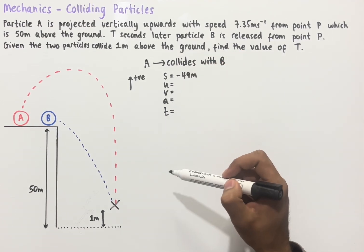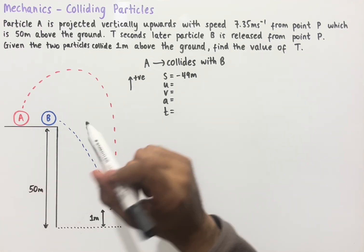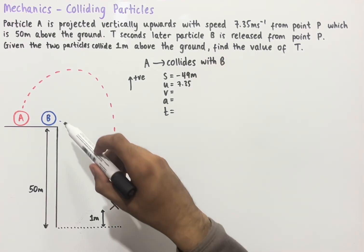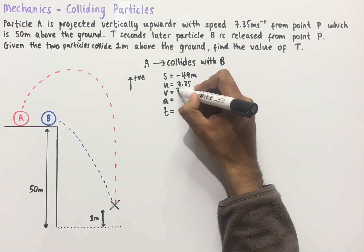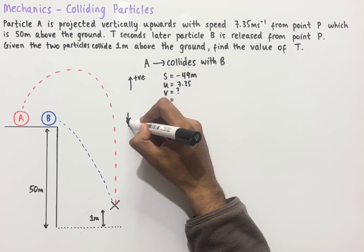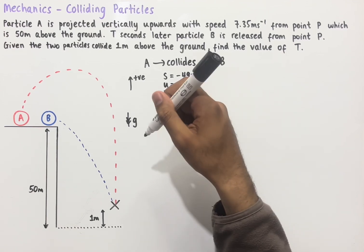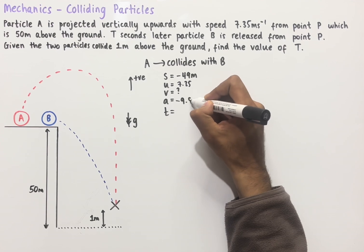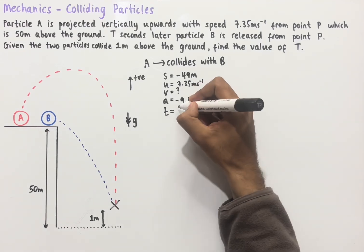The initial velocity of particle A is 7.35 meters per second, and since particle A is projected upwards, this is positive. We don't know the final velocity at the point where particle A collides with B, so we leave that as unknown. We know acceleration due to gravity always acts downwards, given by g equal to 9.8. Since we made upwards positive, we write this as minus 9.8. We also don't know the time for particle A's journey, so we leave that as unknown too.